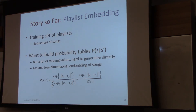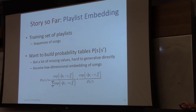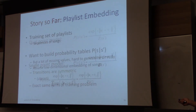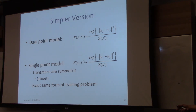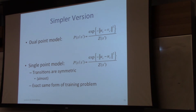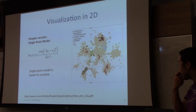Story so far: playlist embedding. Given a training set of playlists (sequences of songs), we build probability tables. The raw unstructured versions of these tables have a lot of missing values, so we assume this probability table can be filled in using the low-dimensional embedding over songs. We talked about why there's an entry point and an exit point. A simpler single-point model would make transitions almost symmetric — forwards or backwards in the playlist — but the training problem form is exactly the same.